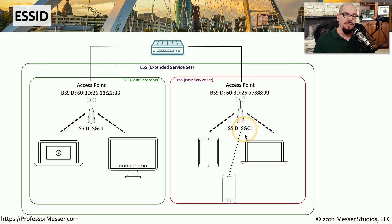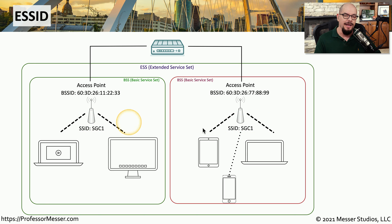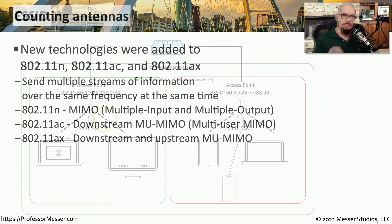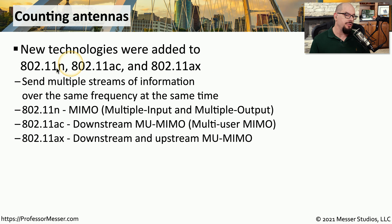Many of us might even do this in our homes, with one access point on one end of the house and another on the other end. We can configure the SSID and security information to be identical between them, and our device will automatically roam to the closest access point. In a previous video, we talked about 802.11n, AC, and AX standards as supporting multi-user MIMO.